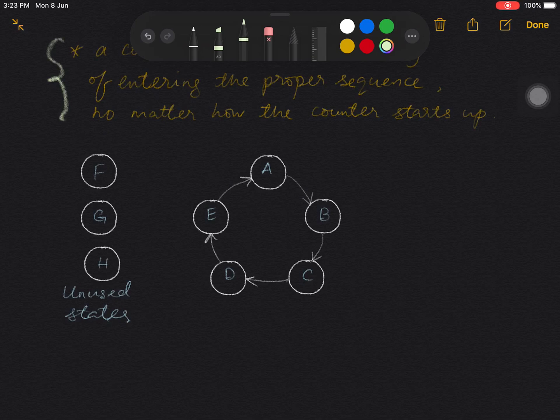So that random initial state can be either A or B or C or D or E, or even one of the unused states, F, or G, or H.